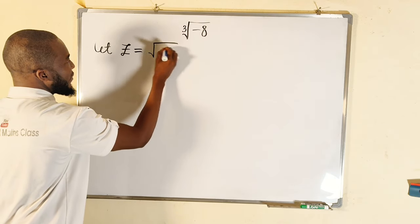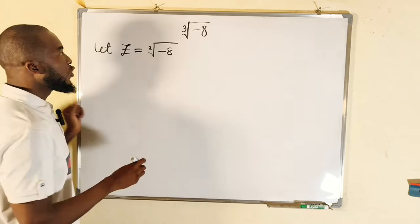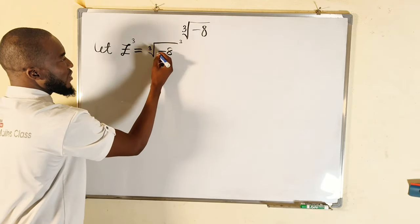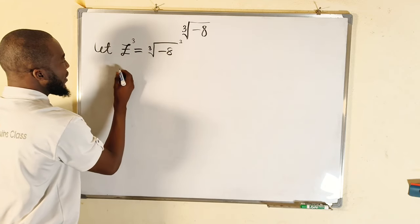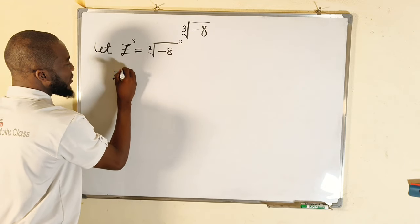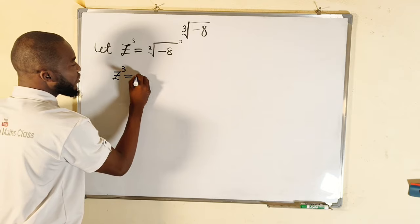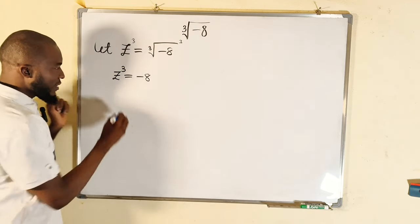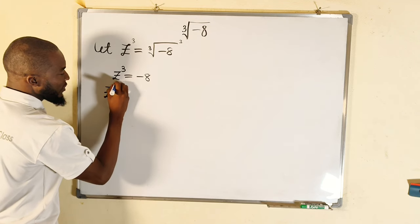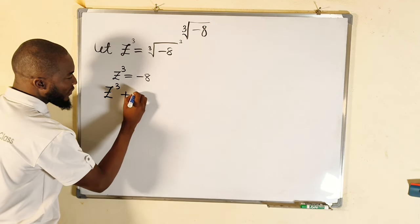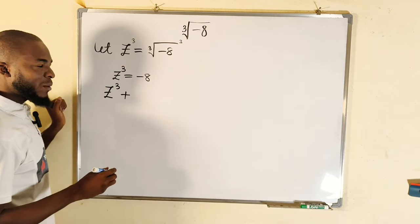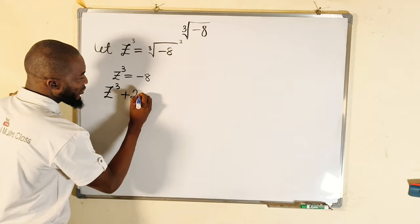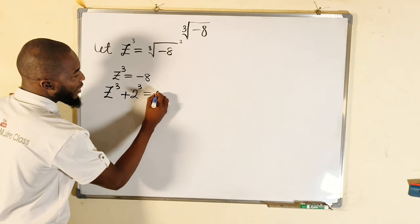Now let us cube both sides — raise this to the power of three and raise this to the power of three — such that the cube root cancels, leaving z to the third power equal to negative eight. We bring negative eight to the other side; as it crosses over it becomes positive eight, which can be written as two to the power of three.